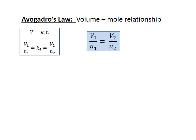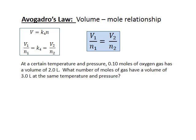Let's put this to the test here. I've got 0.1 moles of oxygen at a certain temperature and pressure and the volume is 2 liters. And then I want to know how many moles of gas would have a volume of 3 liters at the same temperature and pressure. So I tabulate my data. My initial conditions are 2 liters and 0.1 moles. I've got final conditions here of 3 liters and an unknown quantity of moles.